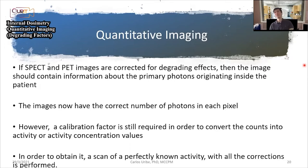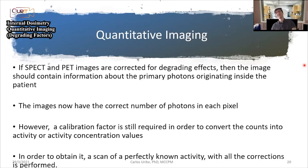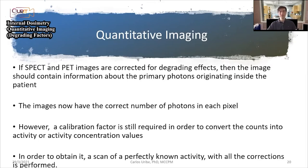The quantity of interest in nuclear medicine is either radioactivity — in units of megabecquerel — or activity concentration, typically megabecquerel per milliliter. To obtain the calibration factor, we take a source for which we know exactly how much radioactivity is present, perform a scan, collect counts with all necessary corrections applied, and then derive the conversion factor from counts to known activity.